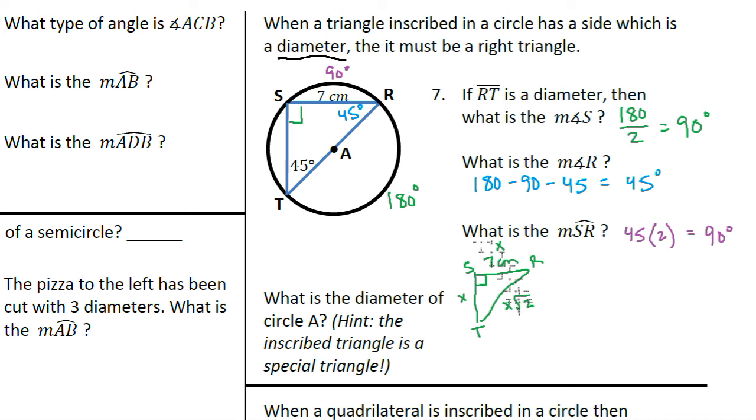And the last thing I can use is the rules of special triangles. This is a 45-45-90 triangle. That means if this leg is seven centimeters, then this leg is seven centimeters, and then this hypotenuse is seven times the square root of two.